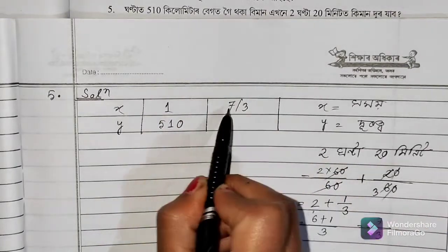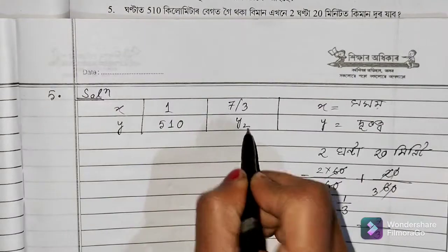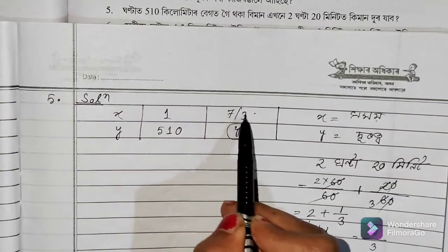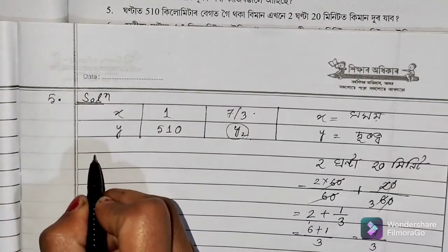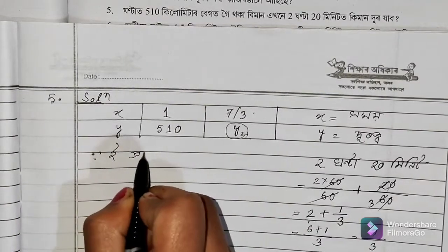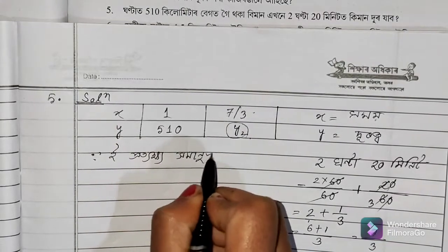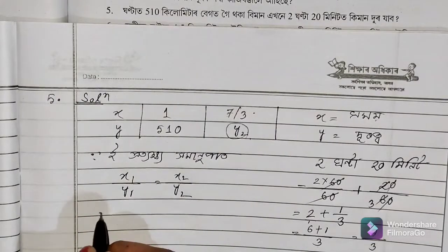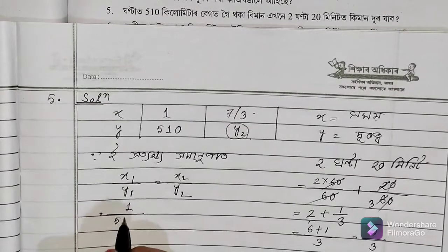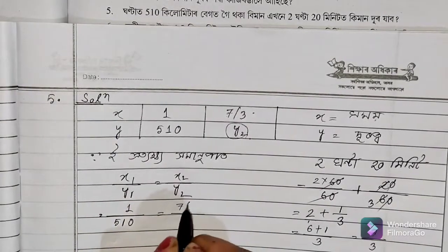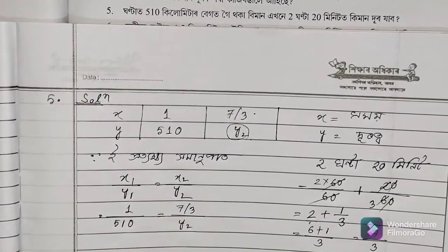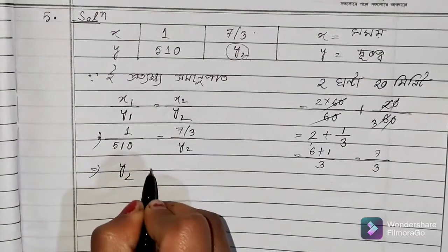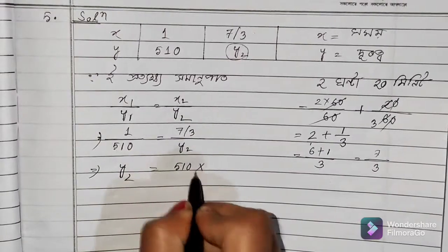So 2 hours is equal to 7 divided by 3. A2 is equal to 7 divided by 2. x1 is equal to 1 and y1 is equal to 2. x2 is equal to 7 by 3 and y2 is equal to 7 by 3.